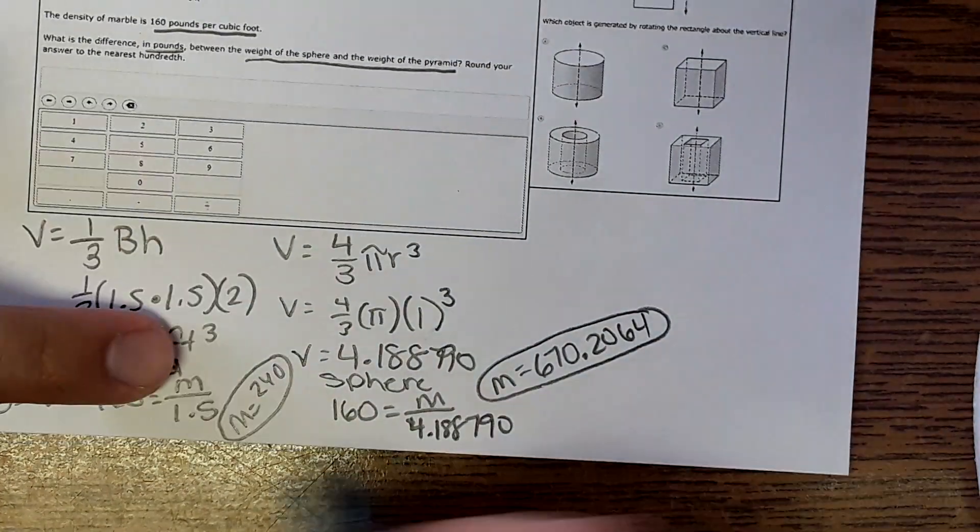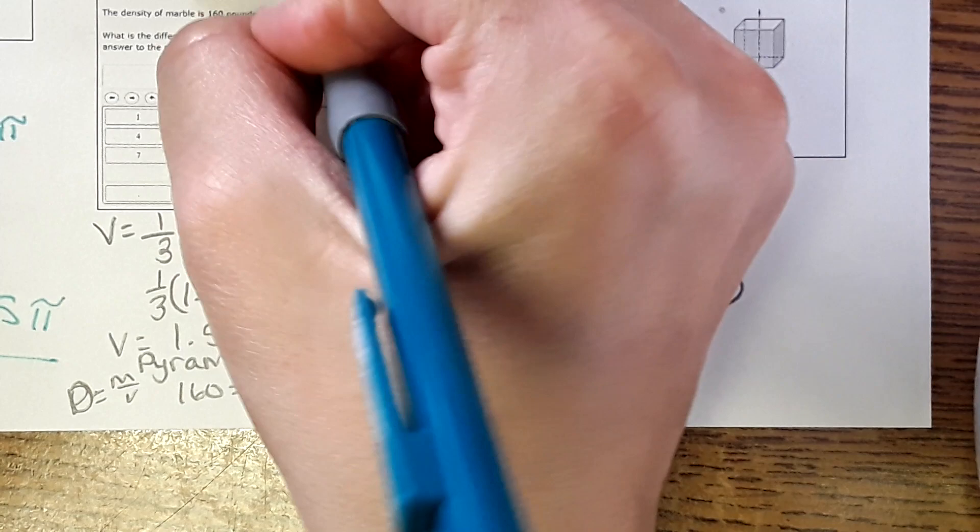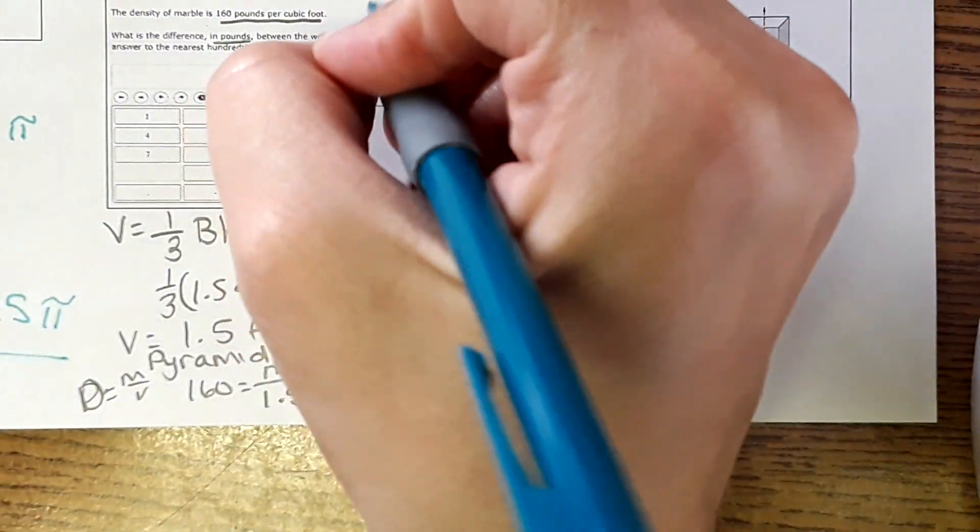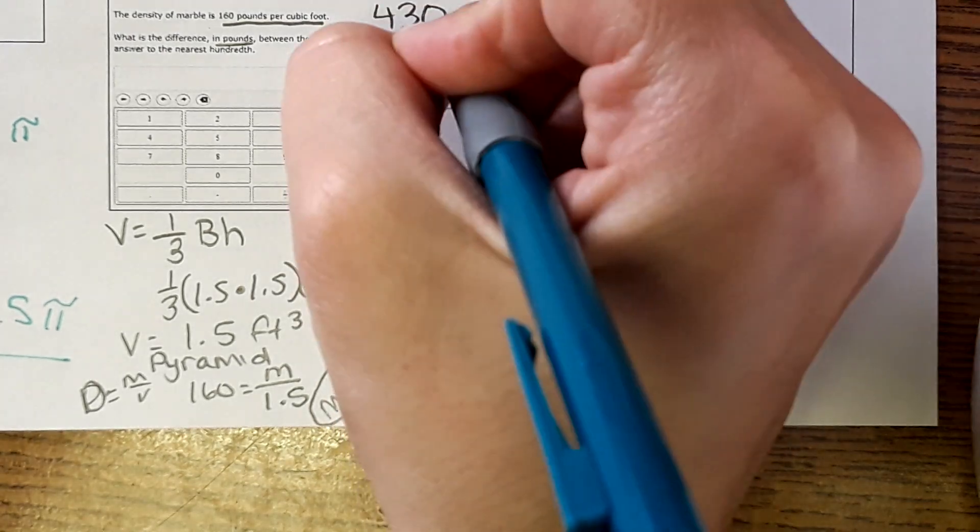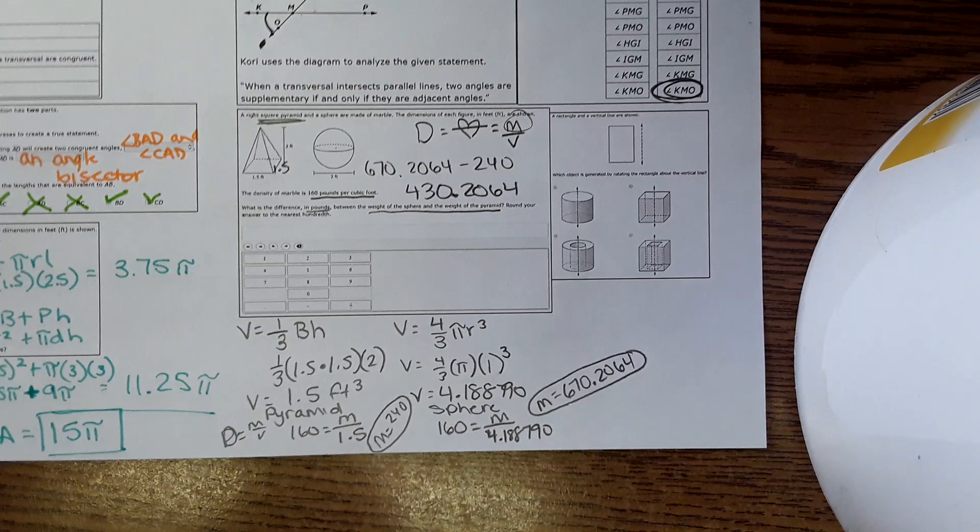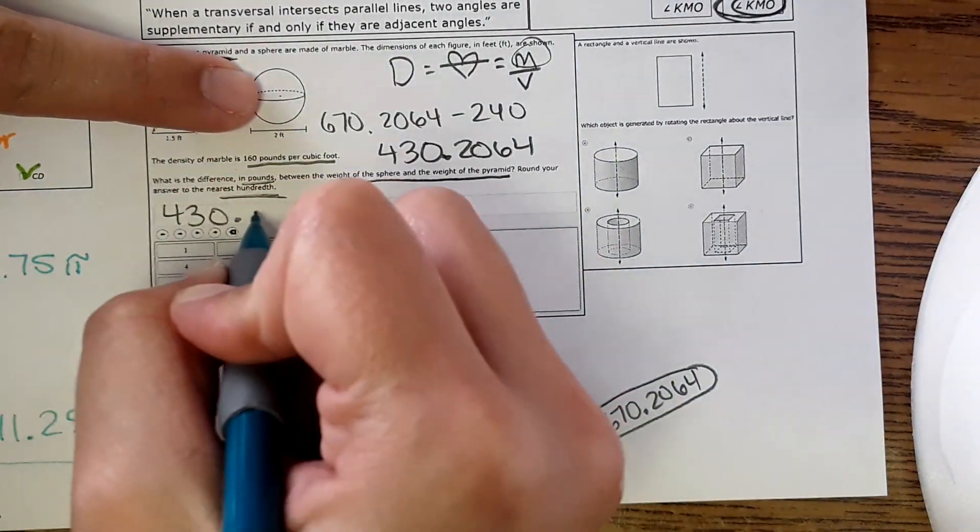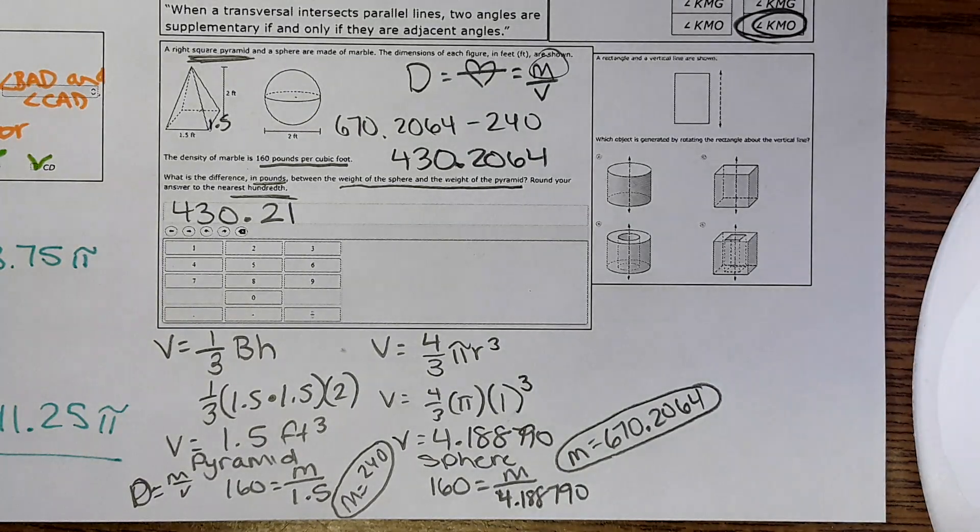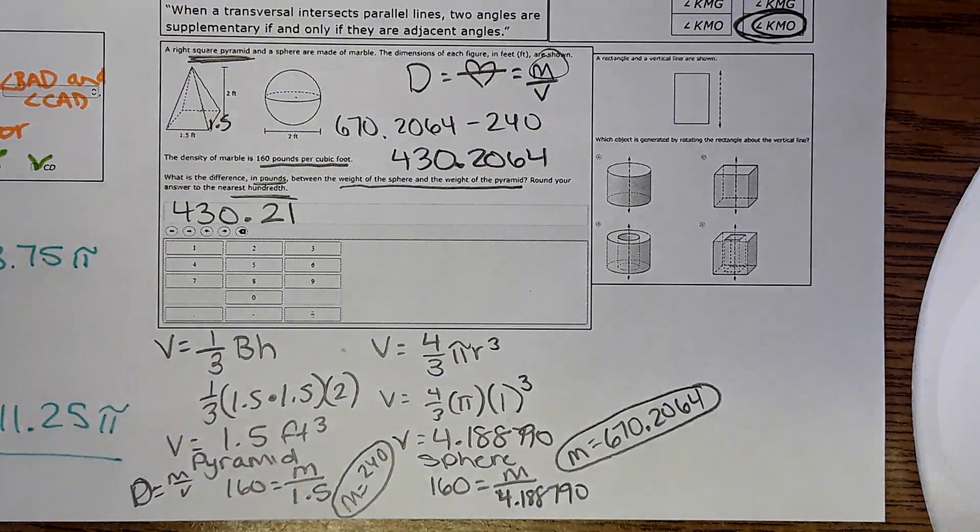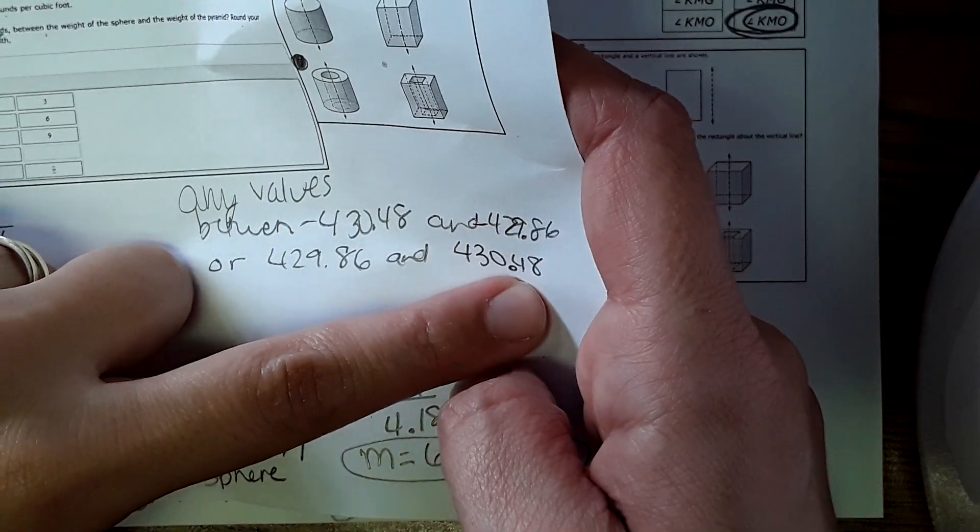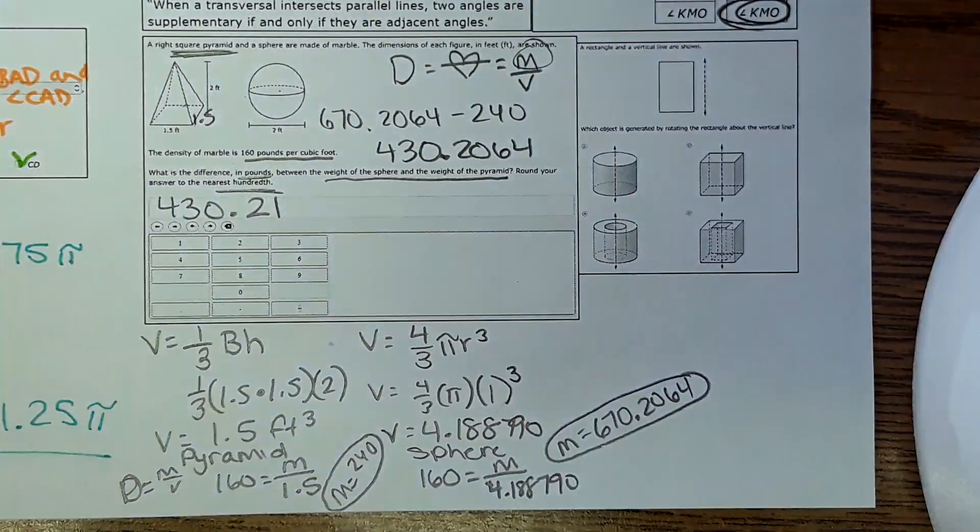Okay, last step is to find the difference between the two masses, so you would subtract 670.2064 minus 240, and it comes out to 430.2064. Let me zoom out. And round to the nearest hundredth, so 430.21. Something that's interesting about this one, especially the correct answers, it says it will accept anything between 429.86 and 430.48, so if you do have any rounding issues with π, it'll still accept it.